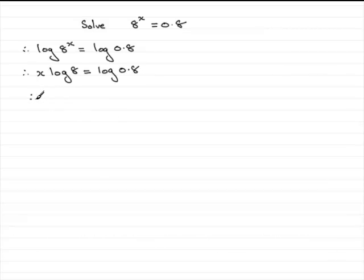And to get x all you've got to do now is divide both sides by log of 8 in base 10. So you've got the log of 0.8 in base 10 all divided by the log of 8 in base 10.